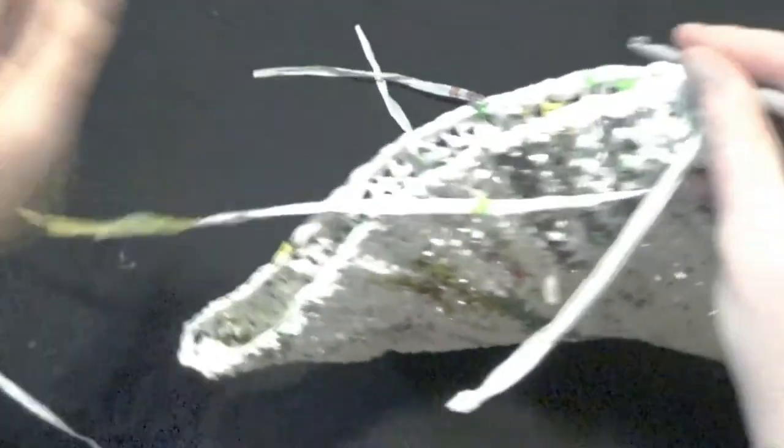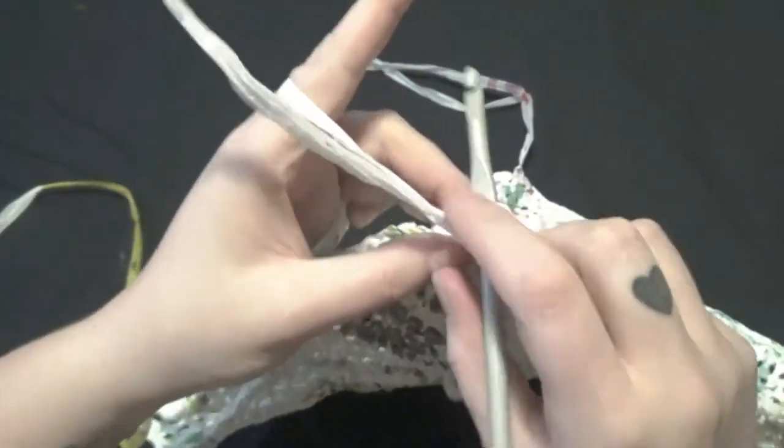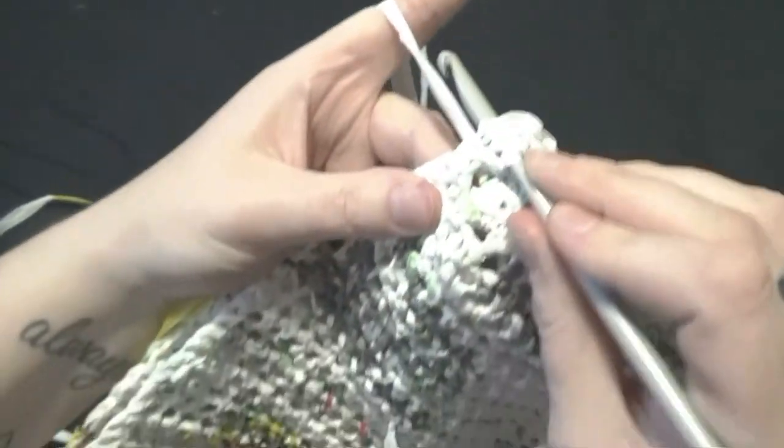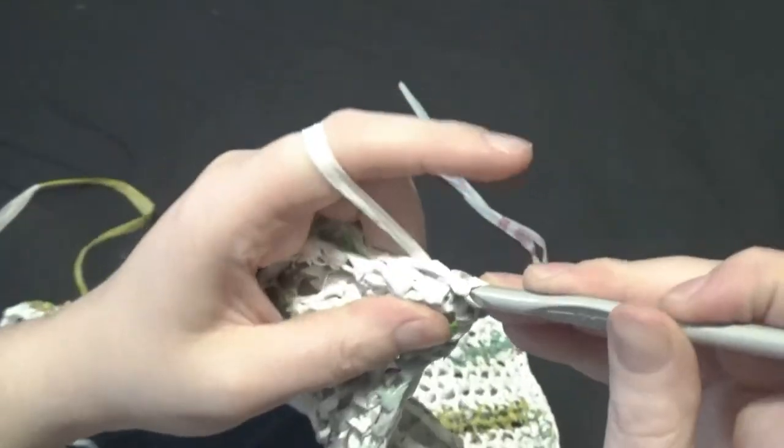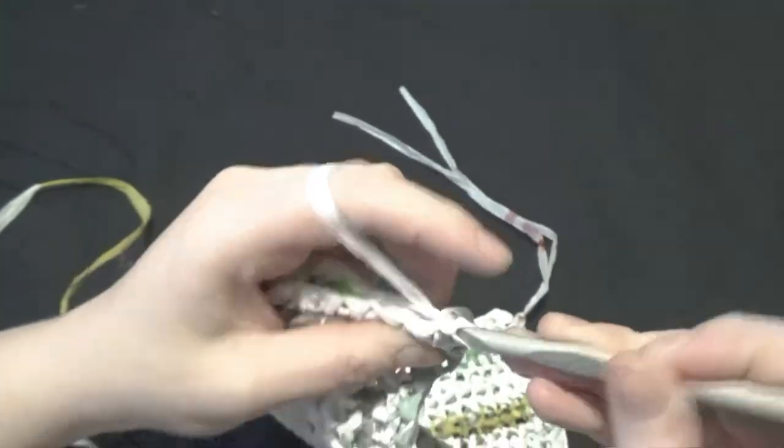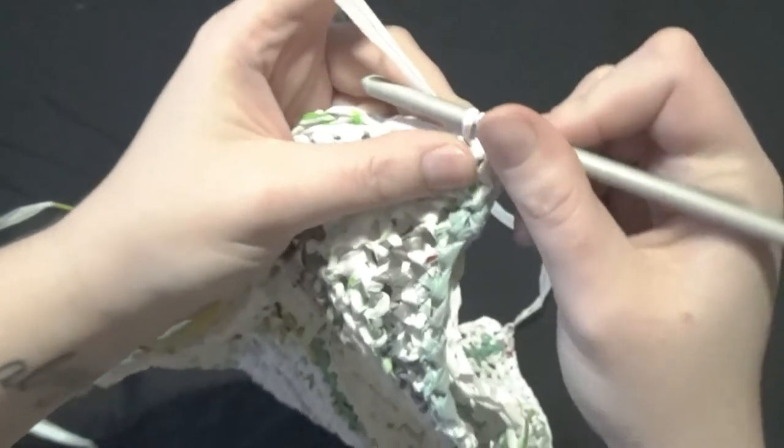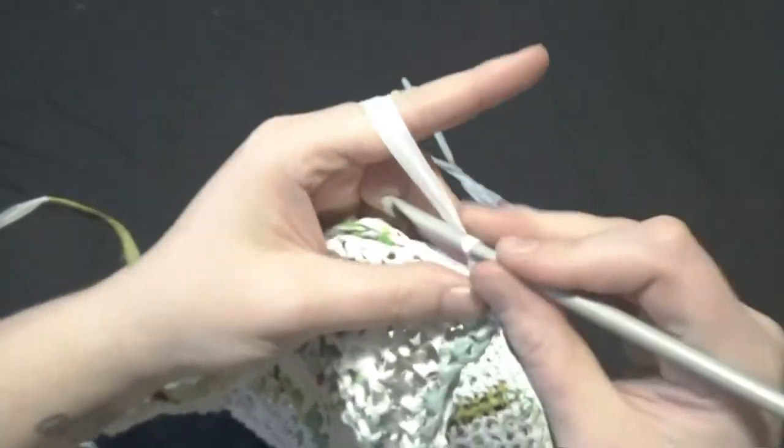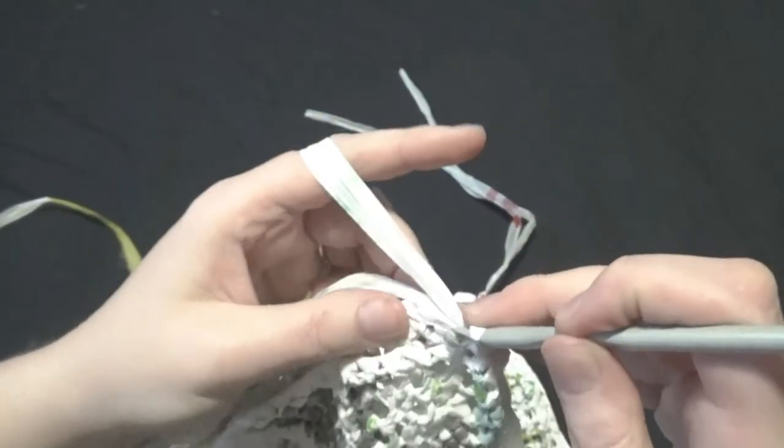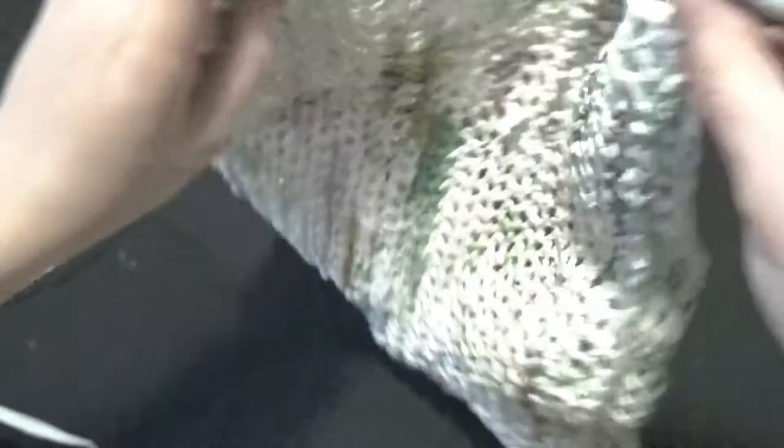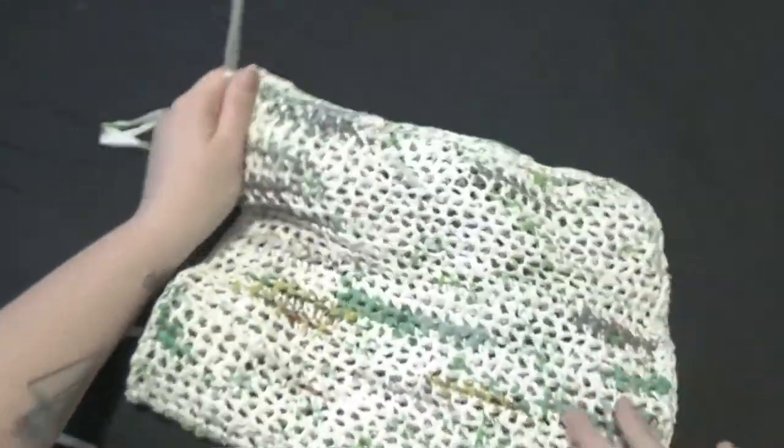And then we're going to take the yarn and we're going to yarn over and through. So then we'll have two on there and we're just going to single crochet our way down like that. Perfect.